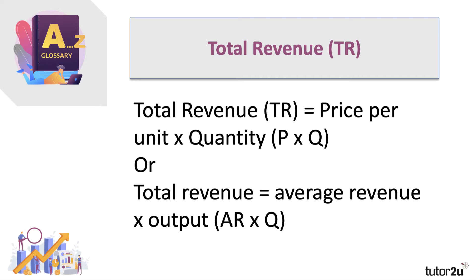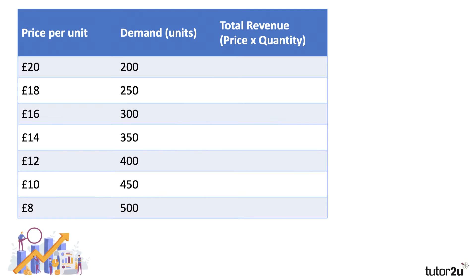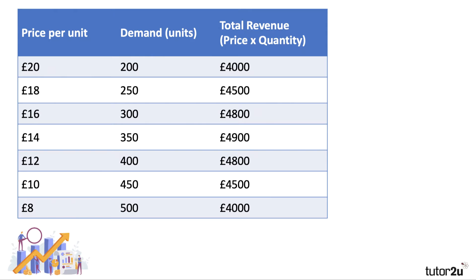Another word for price per unit is average revenue. Here's a little example: the price goes down and demand is increasing by 50 units — it's a linear demand curve. So for every two pounds reduction in price from 20 to 18, demand increases by 50 units. We sell 200 units at 20 pounds, giving us revenue of four thousand pounds. If we lower the price to 18, we sell 50 more — so 250 times 18 is four thousand five hundred.